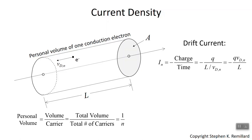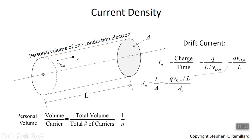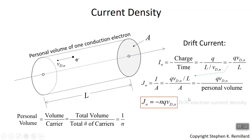So we have an expression for current: q times velocity divided by distance, where the velocity carries subscripts for drift and electrons. The personal volume has a cross-sectional area A, so dividing by A gives current density J. The electron current density is minus qv over L, divided by area. The denominator is A times L — the personal volume. So it's qv over personal volume, and since personal volume is 1 over n, I replace that with n.